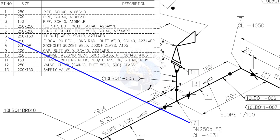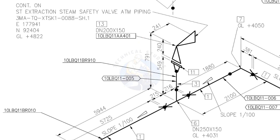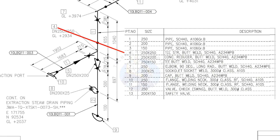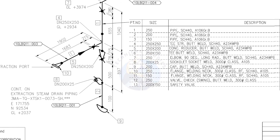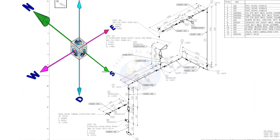Item number 6 is a reducing tee. See what is item number 13 — it is a safety relief valve. Being familiar with valve symbols will be a big advantage for you. See item number 4: straight tee. Item number 5 is a concentric reducer. Item number 8 is a socket weld branch. Item number 9 is a cap.